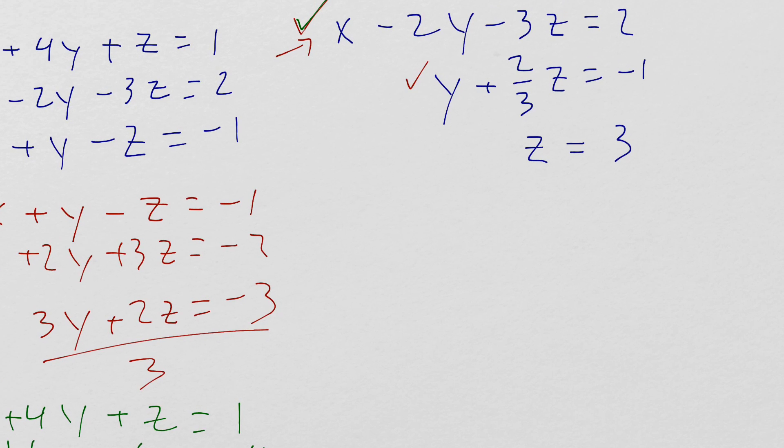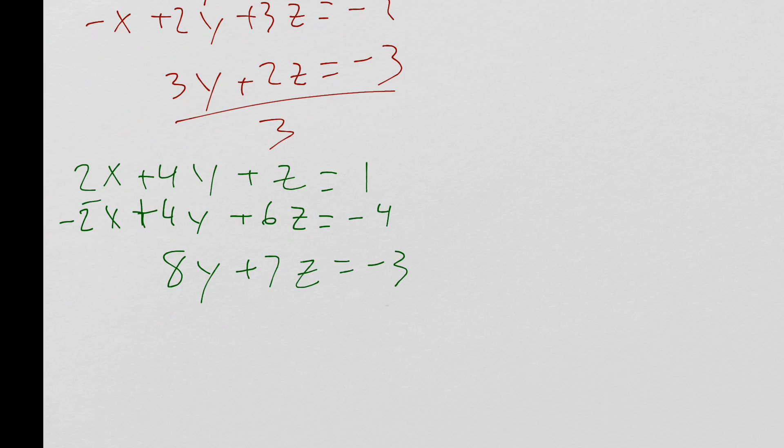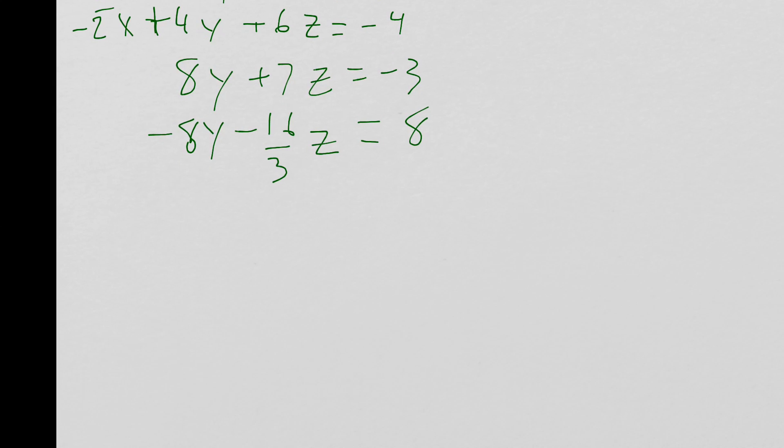Multiply this equation by a negative 8. I get negative 8y minus 16 thirds z equals 8. Combining these two equations, the y's cancel, I get 5.